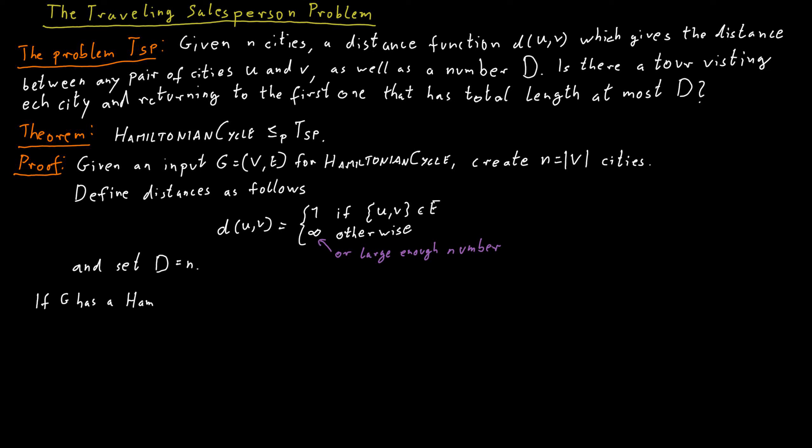So let's argue that this is indeed the case. First, if G has a Hamiltonian cycle, then we can simply take that cycle as the tour through our n cities.